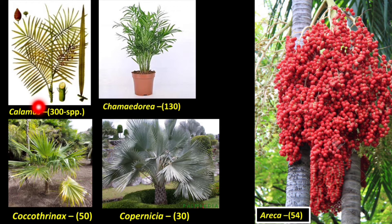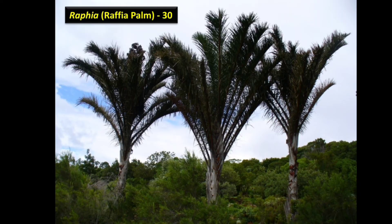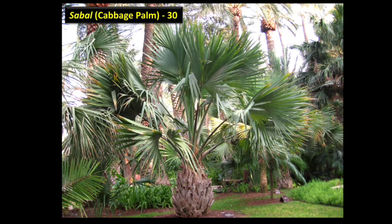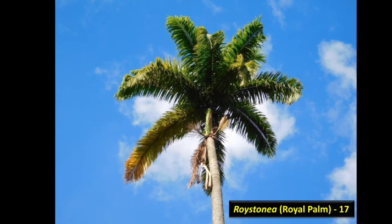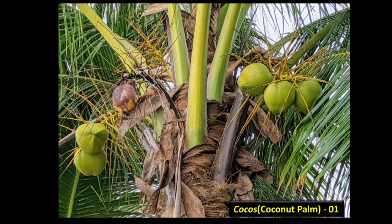The main representatives of family Arecaceae include Calamus with 300 species, Chamaedorea with 130 species, Coccothrinax with 50 species, Copernicia with 30 species, and Areca with 54 species. The Raffia palm has 30 species, Sabal or cabbage palm has 30 species, Phoenix or date palm has 17 species, Roystonea or royal palm has 17 species, and coconut palm, genus Cocos, is represented by a single species — Cocos nucifera.